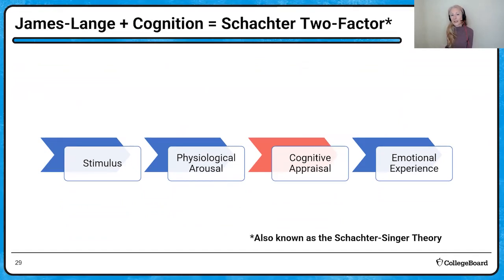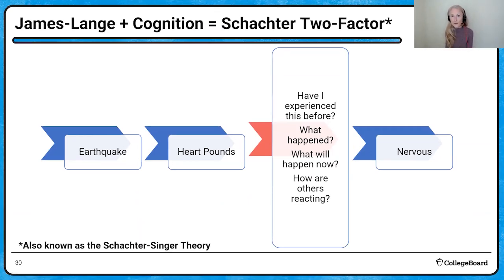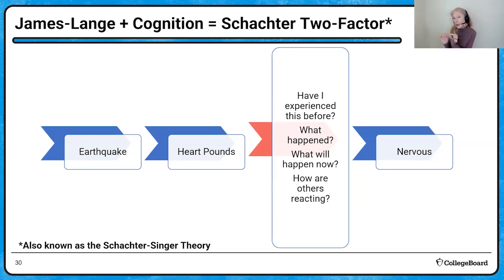But if you add cognition — actually thinking about the arousal, asking why is this happening — it could change your emotional experience. This was Schachter's two-factor, also known as Schachter-Singer theory. So with an earthquake, your heart pounds, and then you ask: have I experienced this before? What happened in the past? How are others reacting? That appraisal is quick, and you might come to a different conclusion — maybe not really anxious, just a little nervous because you've been through earthquakes before and nothing bad happened.